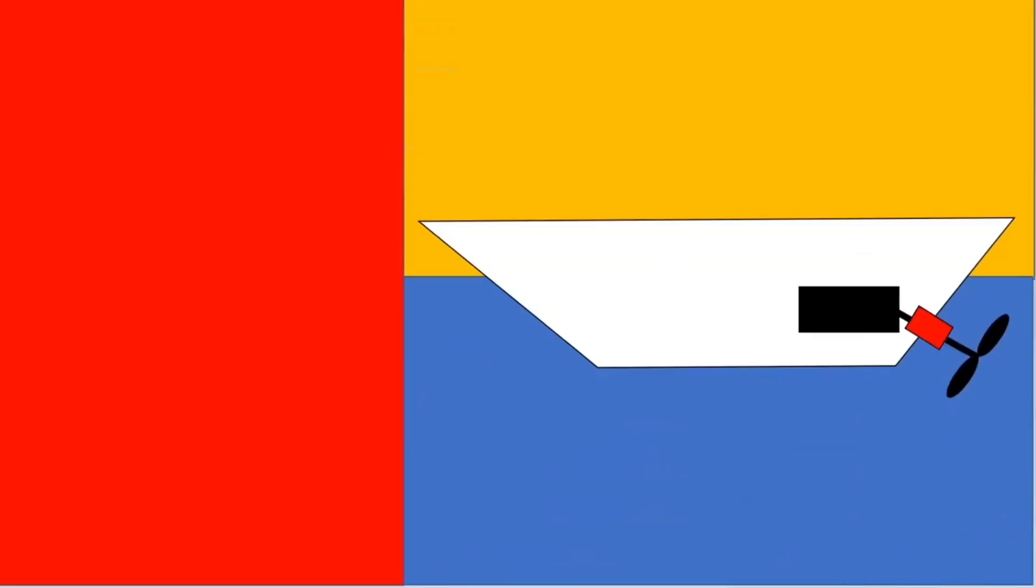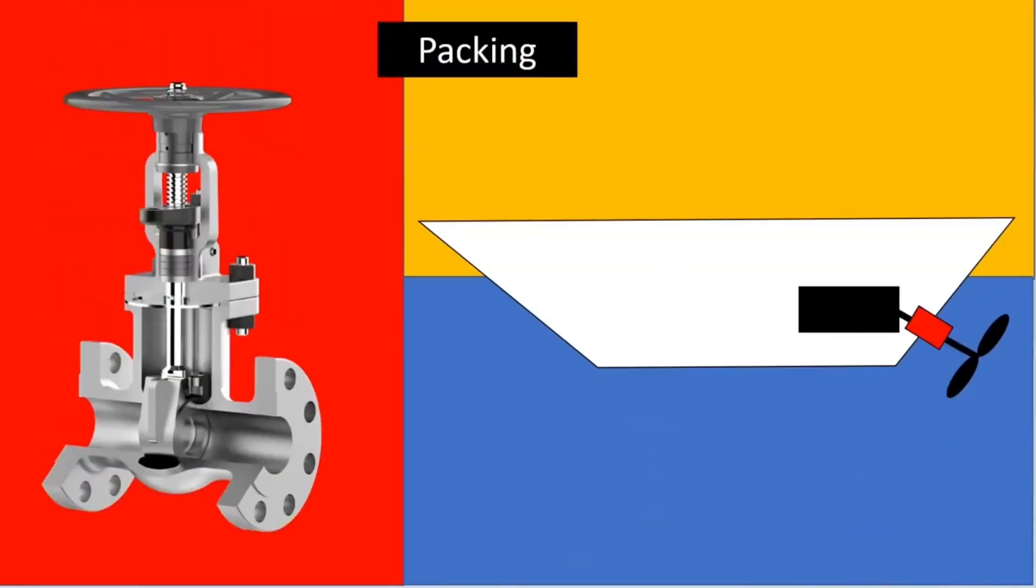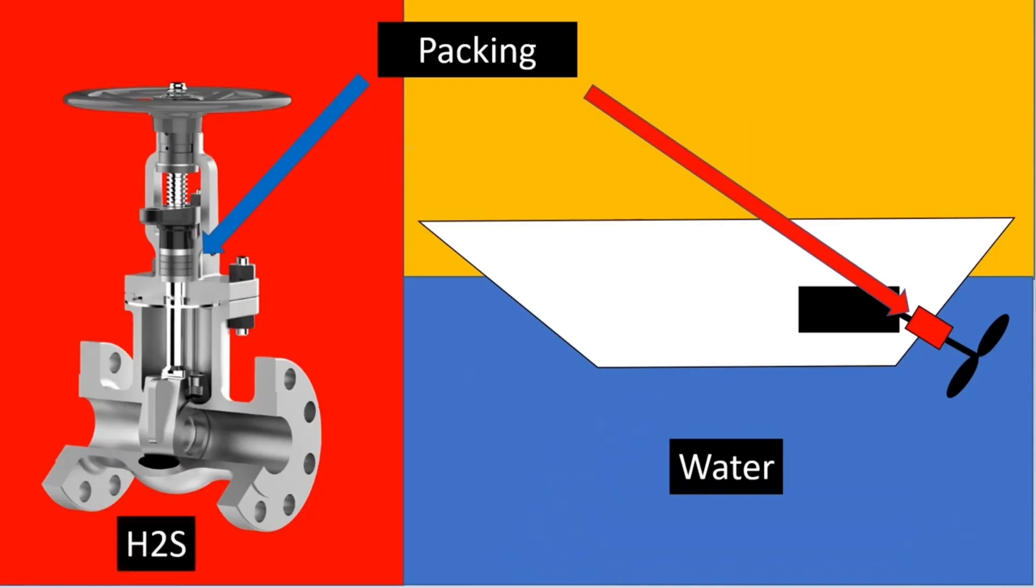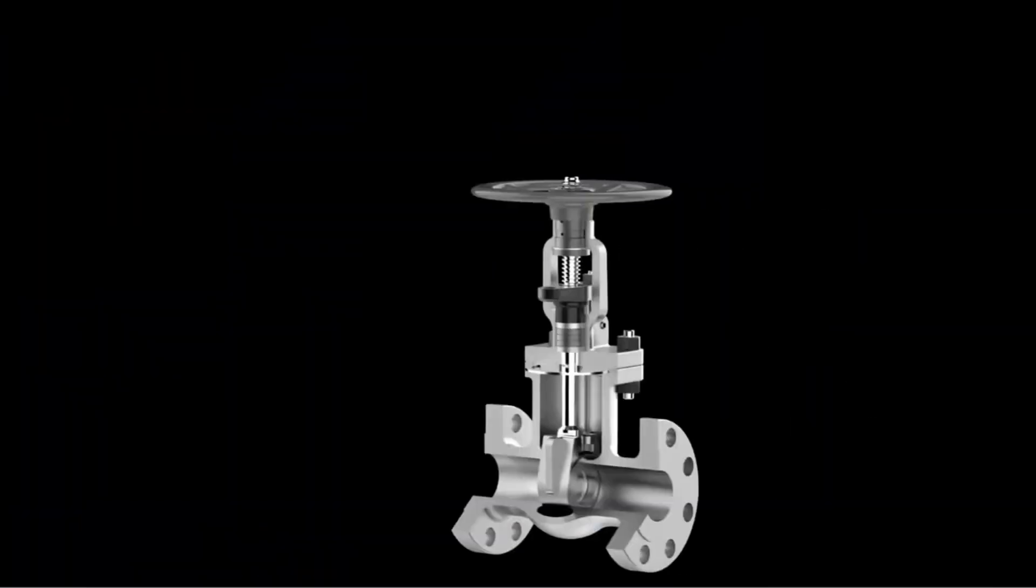This same concept also applies for a control valve. Let's take the same example of the boat and now put a control valve. Both these places require packing. For a boat the concept is still a little simple because the liquid is finally water, but the control valve has to go through a lot of services - corrosive, erosive, toxic, etc.